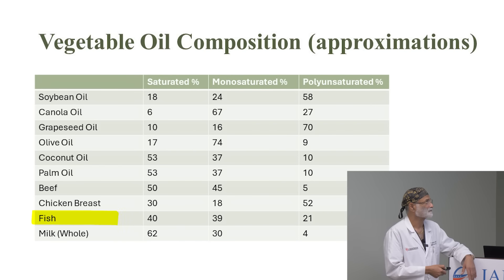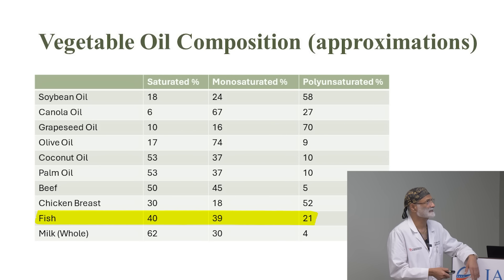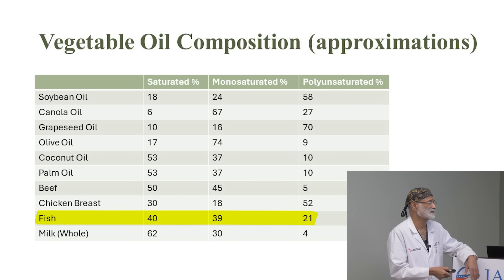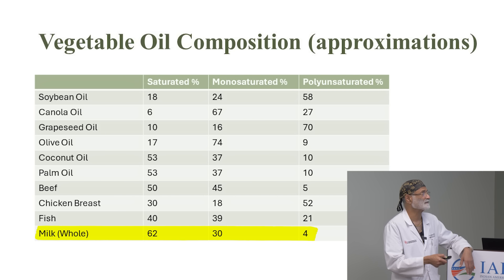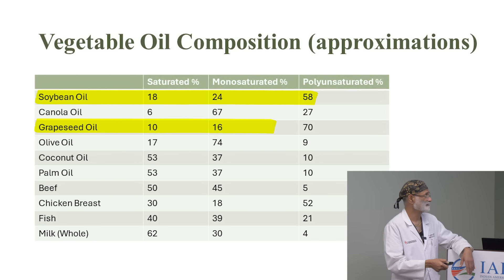Fish is 40% saturated, 39% monounsaturated — many people think fish is mostly polyunsaturated, but it's not; it's got 40% saturated fat. Lard is 62% saturated fat, 30% monounsaturated, and only 4% polyunsaturated. So the bad boys are: soybeans — terrible; grape seed — very bad; chicken breast — bad.